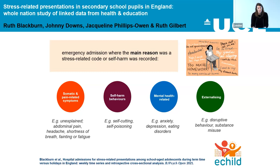In the past, when we've looked at these, we found that the burden is really significant. Around 8% of girls and 4% of boys between the ages of 11 and 17 will have one of these types of hospital admissions, and they account for about 30% of all emergency hospital admissions for that age group.